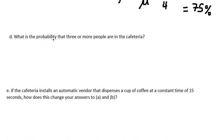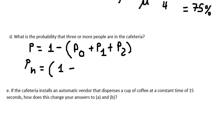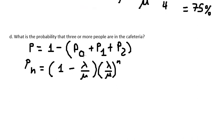Question D: what is the probability that three or more people are in the cafeteria? To calculate this, we use P(n≥3) equals 1 minus the probability of zero, one, and two customers. The formula for P(n) is (1 - lambda/mu) multiplied by (lambda/mu) to the power of n. We need to find P(0), P(1), and P(2).